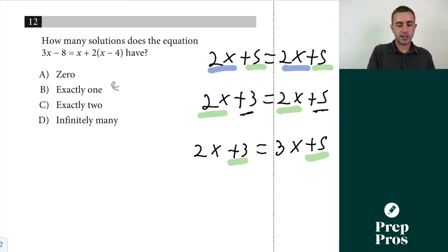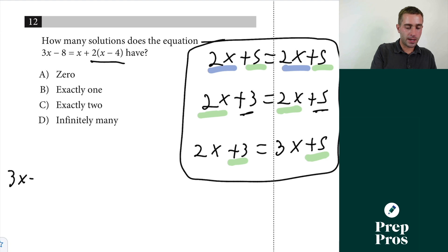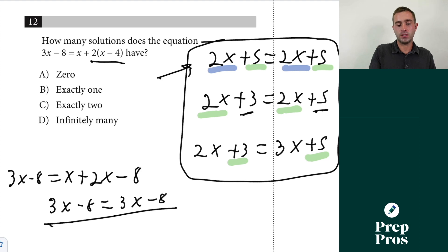So now as we come back to this problem the first thing we're just going to do is we're going to distribute this through and then we get to see which of these three scenarios we have. So we'll get 3x minus 8 equals x plus 2x minus 8 and well that's simply going to give us 3x minus 8 equals 3x minus 8 and that means we're going to have infinite solutions because everything is the same.